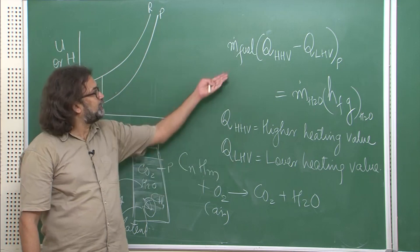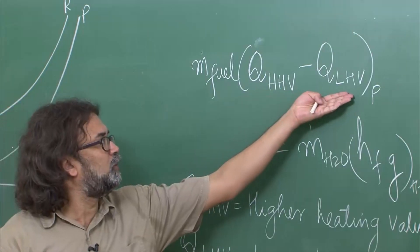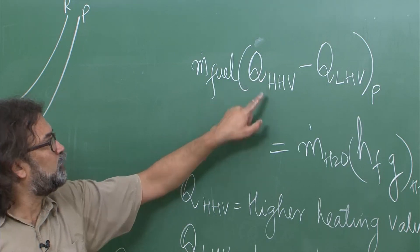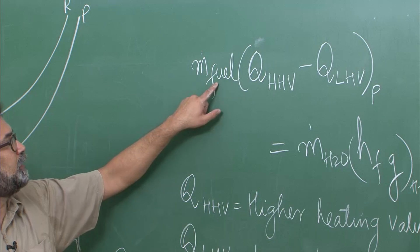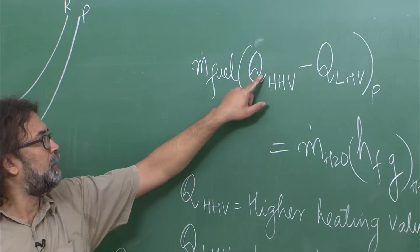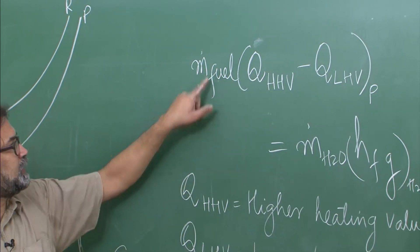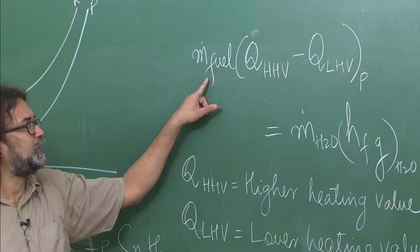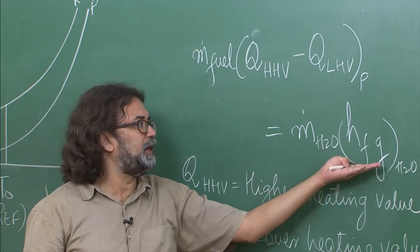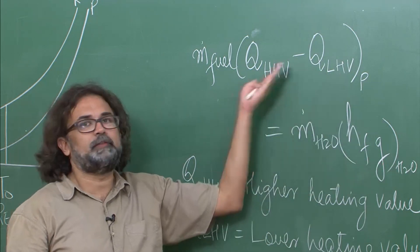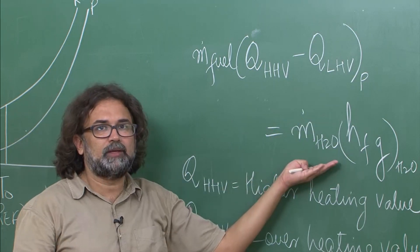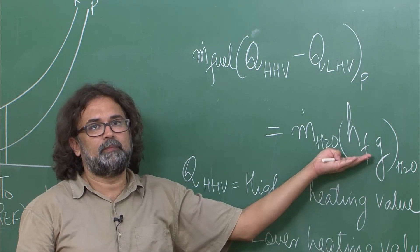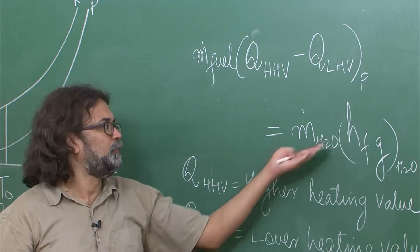If you subtract the lower heating value from the higher heating value at a certain pressure and temperature, on a per unit mass basis — where m-dot-fuel is the mass flow rate of the fuel and the calorific value is per unit mass — you get the difference in consistent units. This difference must be equal to the mass of water produced multiplied by the latent heat hfg of water. So the difference between the higher heating value and the lower heating value is proportional to the amount of water that has condensed, taking away the latent heat from the total enthalpy available in the products.